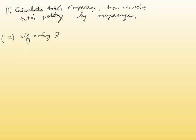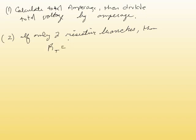Second: if there are only two resistive branches, use RT = (R1 × R2) / (R1 + R2).